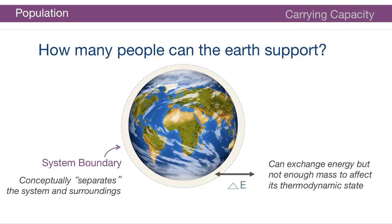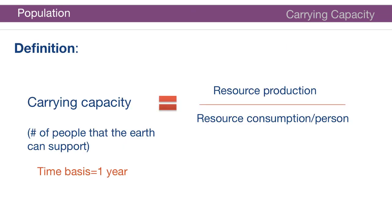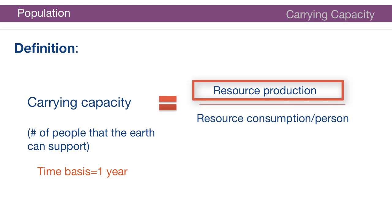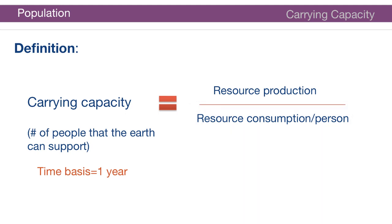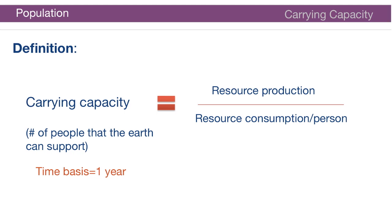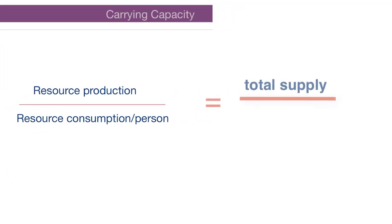If we wanted to determine the carrying capacity of the entire earth, we need to look more closely at the terms in the equation. This equation reminds us that the carrying capacity of the earth in a one-year period can be found by taking the total stock of resources produced in a year and dividing it by the average resources consumed per person.